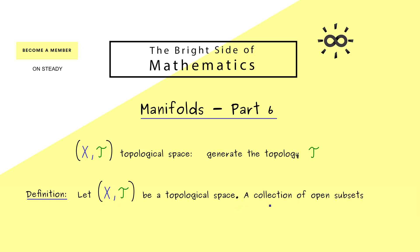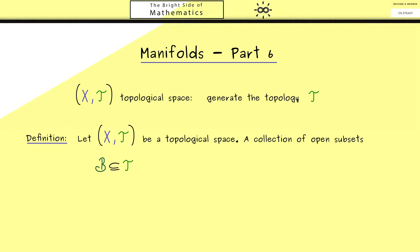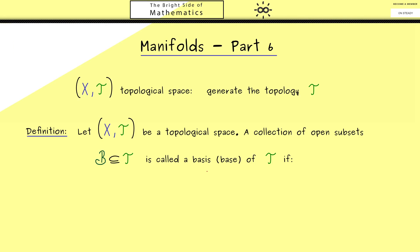And now we just take a collection of subsets, more precisely open subsets, which means they are elements in T. In other words, we have a subset of T we can call B. Of course, here B stands for basis. More concretely, it's called a basis, or sometimes base, of the topology T.